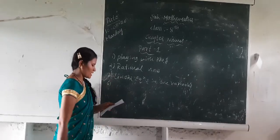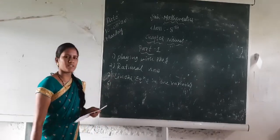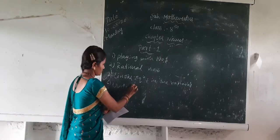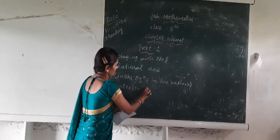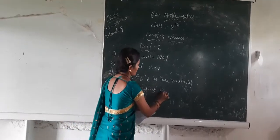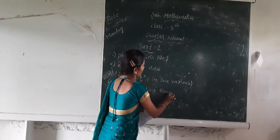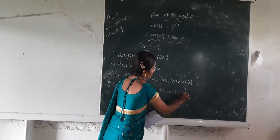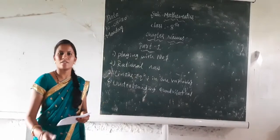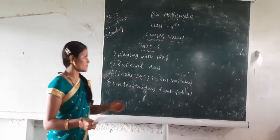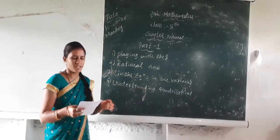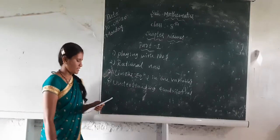The fourth chapter is Understanding Quadrilaterals. Here, quadrilateral definitions are given along with their properties and some problems to solve.